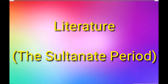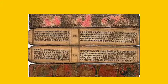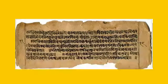Now let's see the literature developments that took place during the Sultanate period. The literature of the period consists of translations as well as original works. Many Sanskrit works were translated into regional languages as well as into Persian and Arabic.